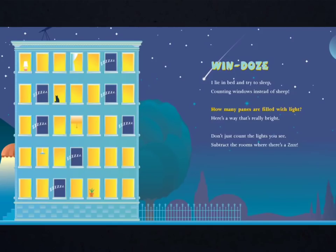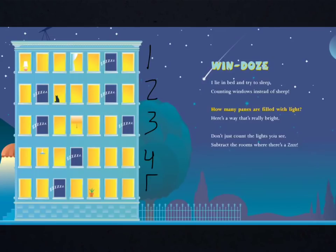Windows. I lie in bed and try to sleep. Counting windows instead of sheep. How many panes are filled with light? Here's a way that's really bright. Don't just count the lights you see. Subtract the rooms where there are z's. So, including all of the windows, even the ones without the lights on, I have 1, 2, 3, 4, 5 equal rows. How many total windows are in each row? What multiplication sentence does this represent?